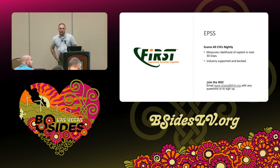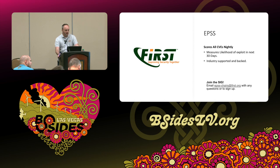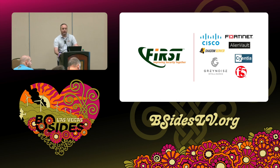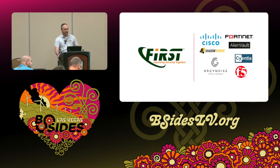The next one is something I'm very familiar with and very passionate about: it's called EPSS — the Exploit Prediction Scoring System. It's through FIRST.org, which also runs CVSS 4. What it does is measure the likelihood of every CVE being exploited in the next 30 days. It's industry-supported and backed. If anybody is super interested in vulnerability intelligence, we have a special interest group that meets twice a month — the email's at the bottom and we'd love to have more people. We have an open Slack too. The people who give their data freely to EPSS are Cisco, Shadow Server, Gray Noise, F5, AlienVault, and Fortinet. Please say thank you to them for providing this data to help make the Internet secure.